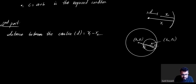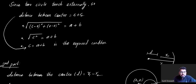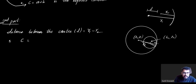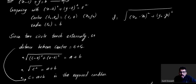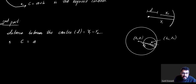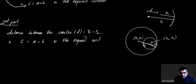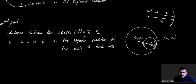Therefore, the required condition for the two circles to touch internally is c equals a minus b. This is the required condition for two circles to touch internally.